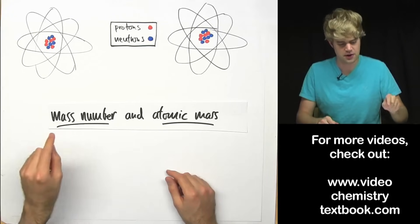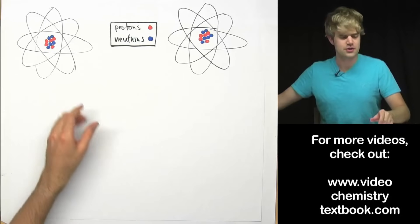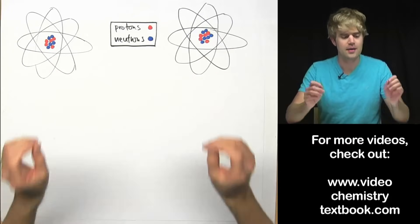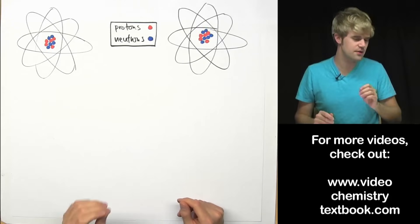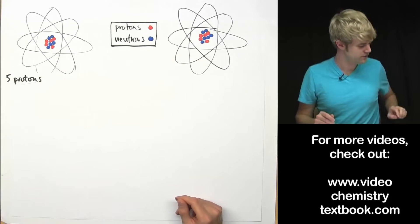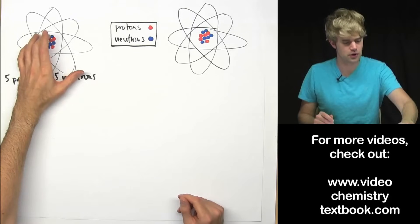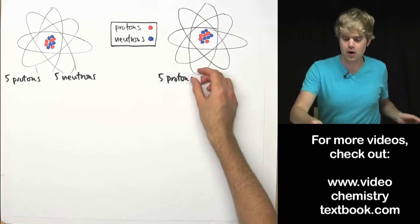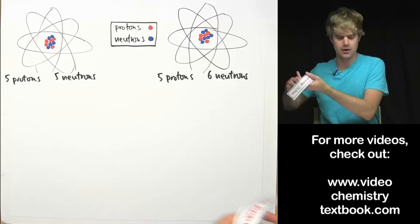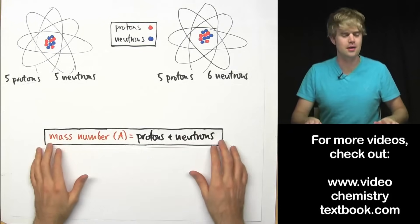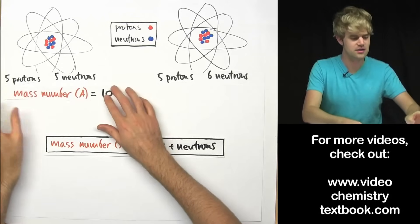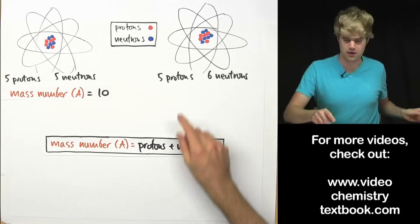So let's start by talking about mass number. I've got two atoms up here. They've got protons and neutrons in their nucleus. This atom over here has five protons — the protons are these red circles — and five neutrons, these blue circles. This atom over here also has five protons but it's got six neutrons. Mass number is the number of protons plus the number of neutrons. So this atom has a mass number of ten — five plus five — and this atom over here has a mass number of eleven — five plus six.